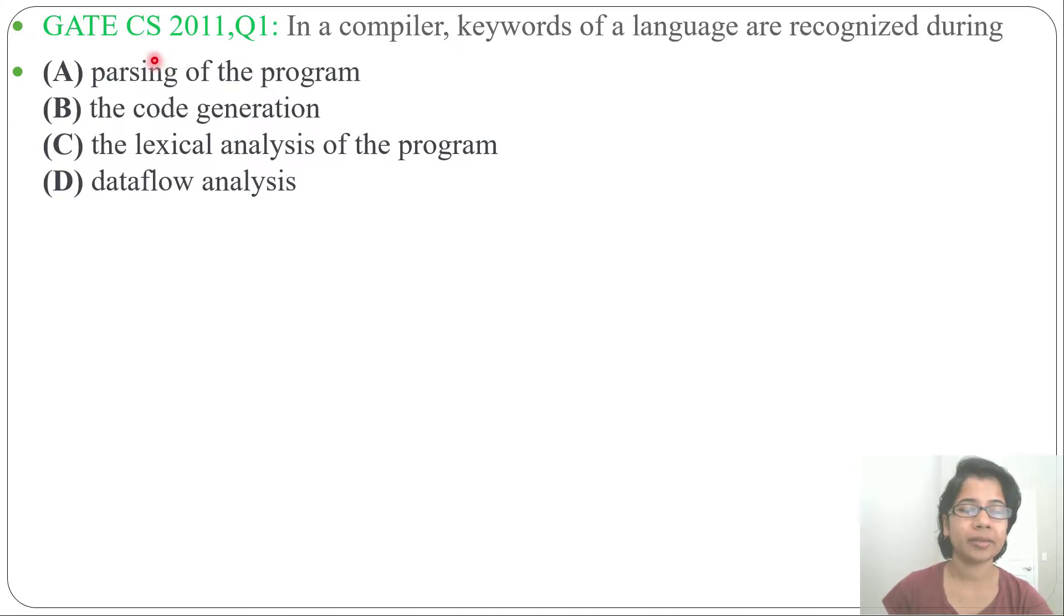Hi, let's solve the next previous question on compilers. This question was asked in GATE CS 2011, question number one. It is asking: in a compiler, keywords of the language are recognized during which phase? Four options are given.